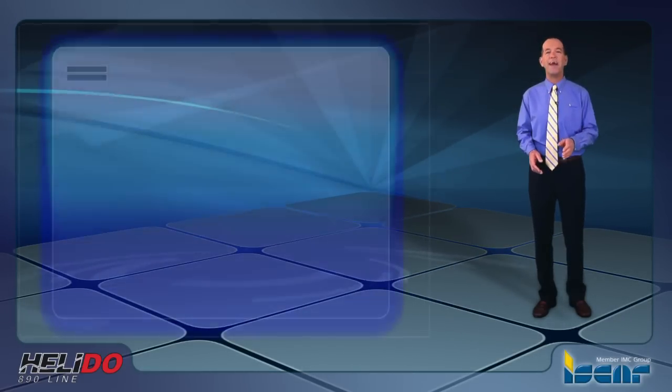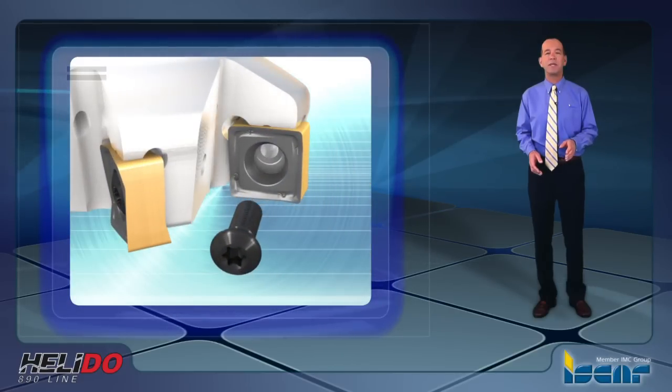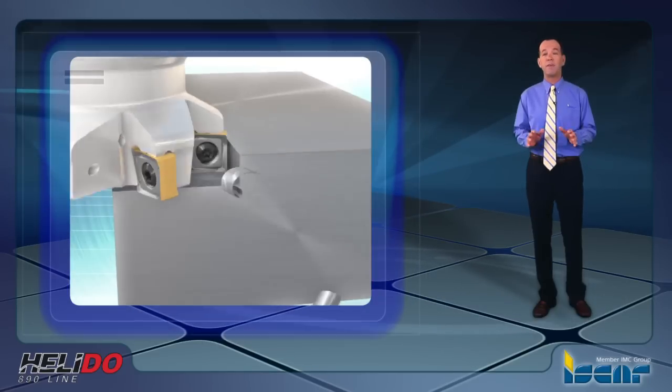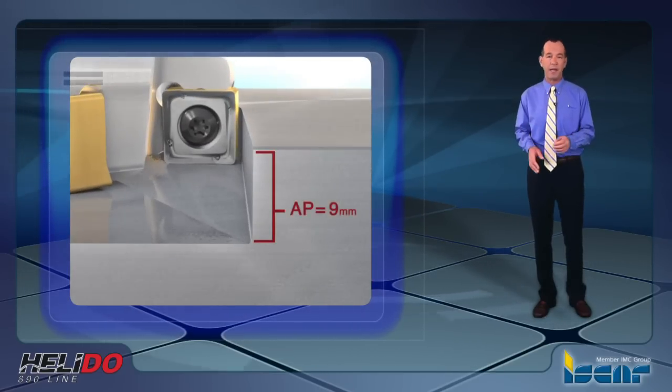The new Helidoo S890 FSN face mills carry square-shaped inserts with eight helical cutting edges which can be used for up to 9mm depth of cut, generating a phenomenal amount of metal removal volume at a fast pace.